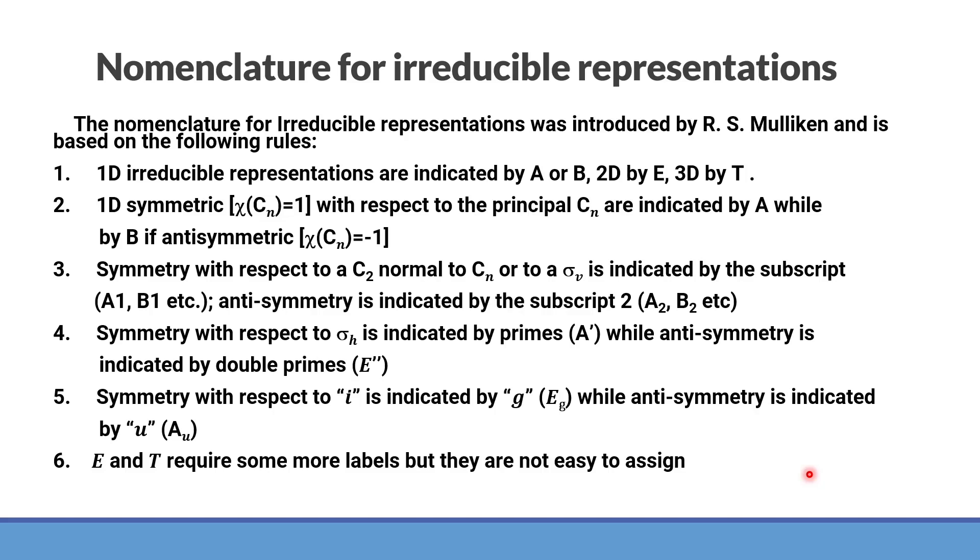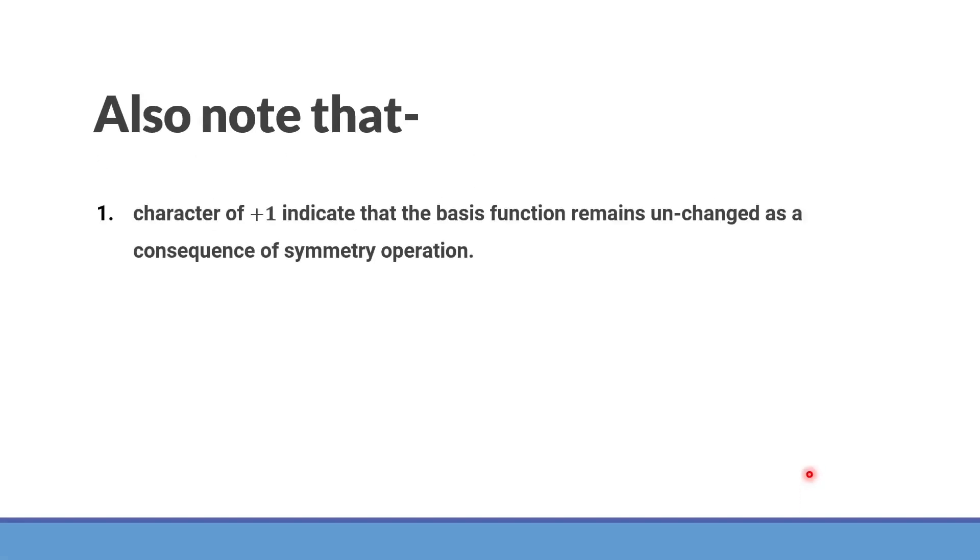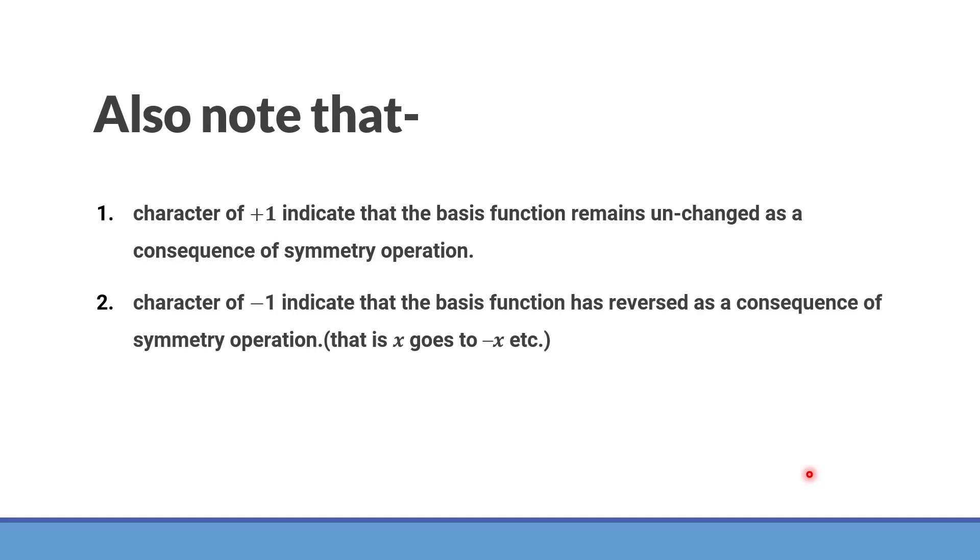E and T require some more variables but they are not quite easy to assign. You have learned that in crystal field theory the d orbitals split into EG and T2G set of orbitals. Now you can see that E stands for doubly degenerate and T stands for triply degenerate set of atomic orbitals. Sometimes it is quite easy to understand that the character of plus 1 indicates that the basis function has not been changed as a consequence of symmetry operation while minus 1 shows that particular basis function has reversed. That is X has gone to minus X, Y to minus Y and so.